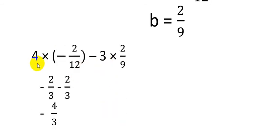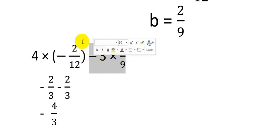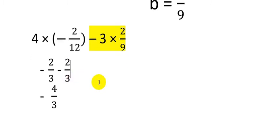We can simplify 4 and 12: 4 divided by 4 is 1 and 12 divided by 4 is 3, because numerator and denominator can be divided. So 1 multiplied by 2 gives a numerator of 2 and the denominator remains 3, with the operator minus. For the second term, minus 3 multiplied by plus 2 over 9 — minus multiply by plus is minus. Then 3 and 9 are also divisible by 3: 3 divided by 3 is 1, 9 divided by 3 is 3. So we get minus 2 over 3.